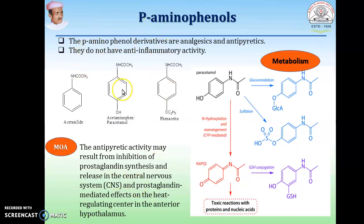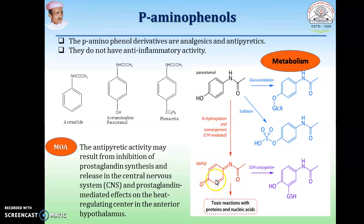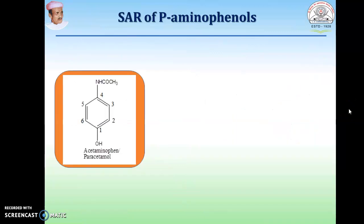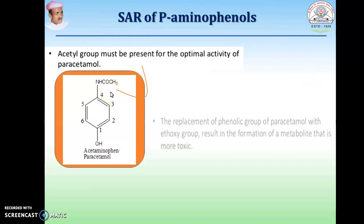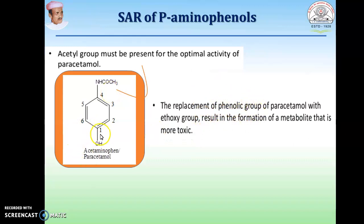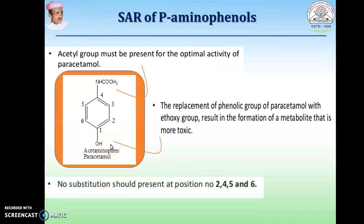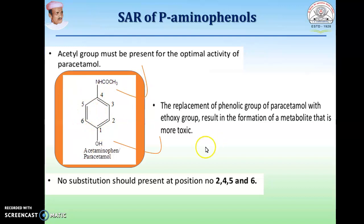Another class: para-aminophenols. These are having mainly analgesic and antipyretic action, without significant anti-inflammatory activity. This is acetaminophen, meaning paracetamol. Another drug, phenacetin, on metabolism gives paracetamol. Paracetamol is metabolized by glucuronidation, sulfation, and N-hydroxylation. By N-hydroxylation it gives NAPQI, a toxic metabolite that produces hepatotoxicity. The acyl group must be present for optimum activity; the hydroxyl group of paracetamol should be in the para position. No substitution on the phenyl ring gives the maximum activity.